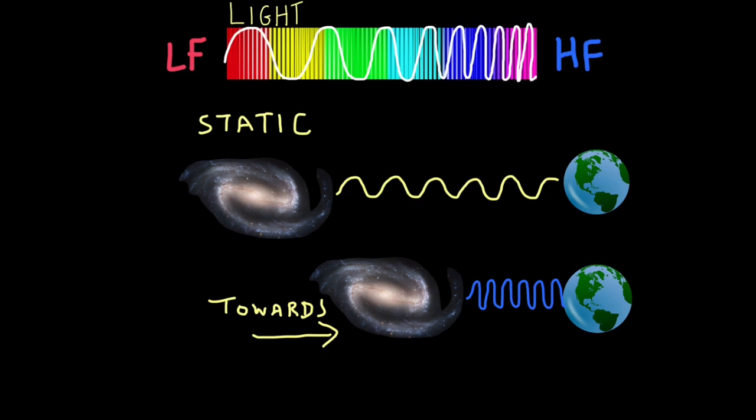Now let's assume that these stars and galaxies were moving towards us. We'd have the same thing. Basically, we'd bunch up those light waves as it moves closer to us, to Earth, and so the light would be shifted towards the blue end of the spectrum. So the light would be blue shifted.